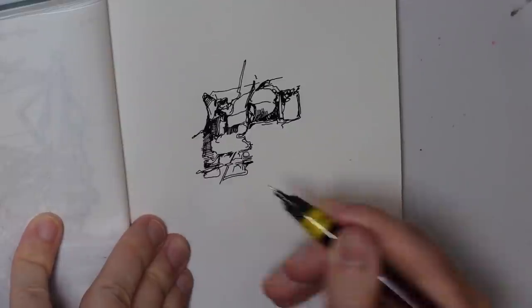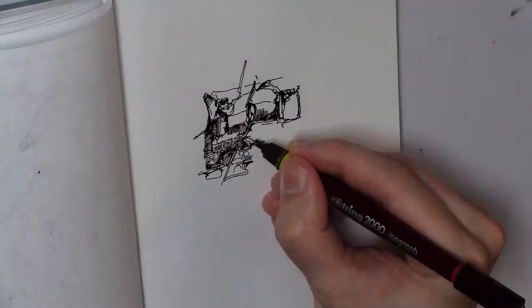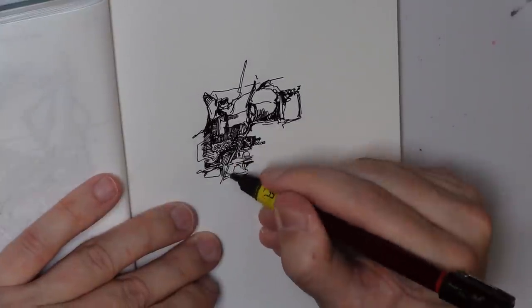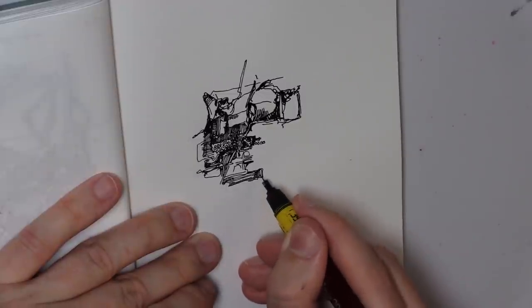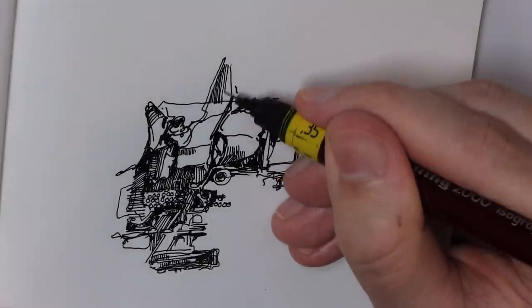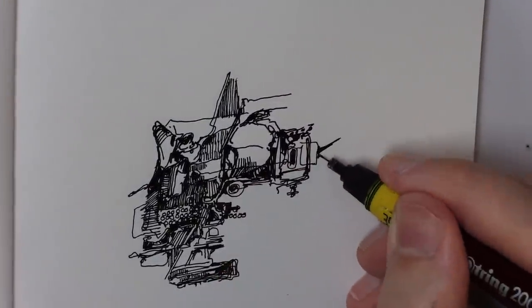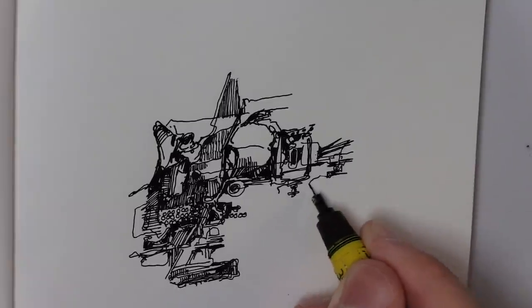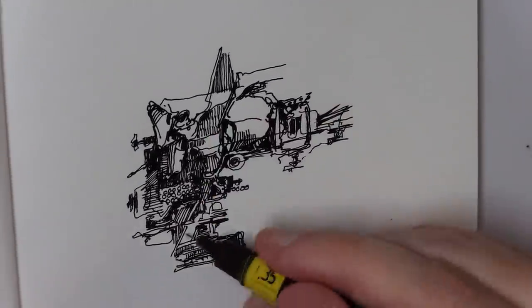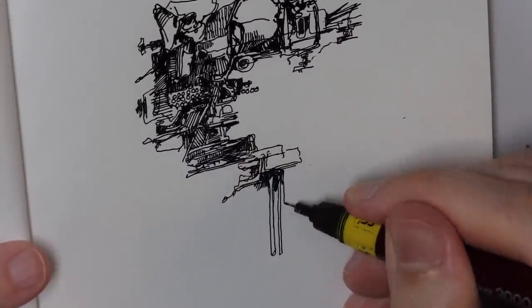I actually ended up switching Rotring Isographs halfway through the video. Halfway through the first drawing I switched from my trusty old 0.35. Everyone who's ever used one of these technical pens knows they are the most finicky pens out there. If any pen is going to randomly give you problems, it's going to be one of these.